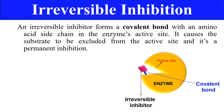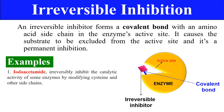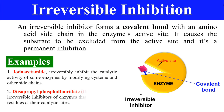Since the enzyme is permanently damaged, the substrate is not able to bind. Examples of irreversible inhibitors include: first, iodoacetamide, which irreversibly inhibits the catalytic activity of some enzymes by modifying their cysteine residues and other side chains. Second, diisopropyl phosphofluoridate (DIPF), which is a very potent irreversible inhibitor of enzymes that have active serine residues at their catalytic sites.